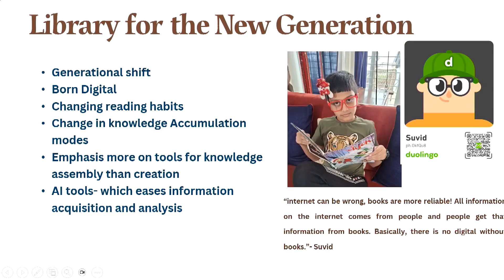More recently, generative AI tools like ChatGPT ease information acquisition and analysis. Especially in the social sciences, it's easy to get an essay generated out of it, or even coding. So in this context, what is the role of the physical library? What is the role of books?